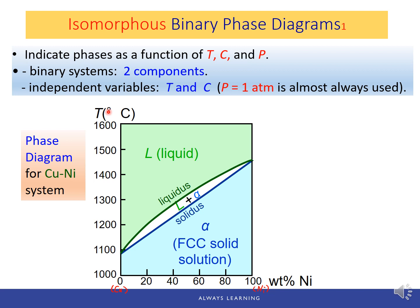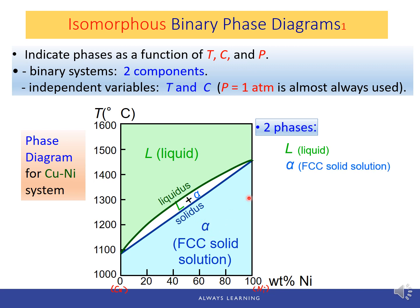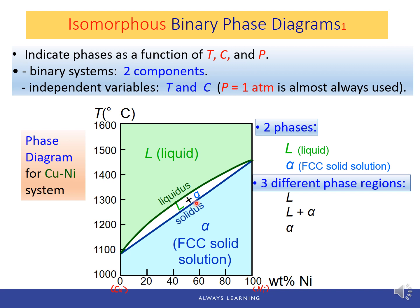The phases depend on the given temperature and composition. There are three phase regions on this diagram: an alpha field, a liquid field, and a two-phase field of liquid plus alpha. The liquid phase and the alpha solid phase (FCC copper-nickel solid solution) are the two phases, with the liquid-plus-alpha region between them.